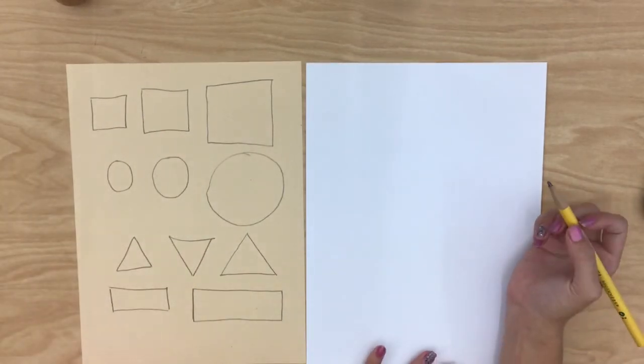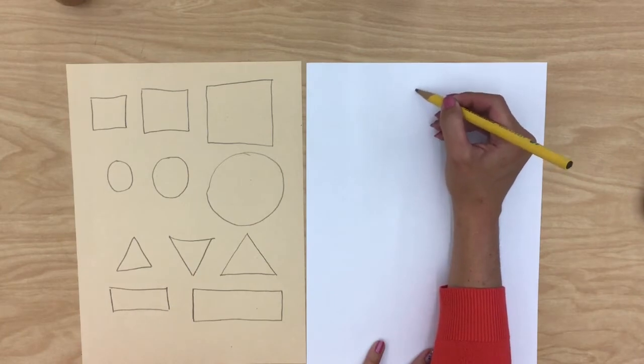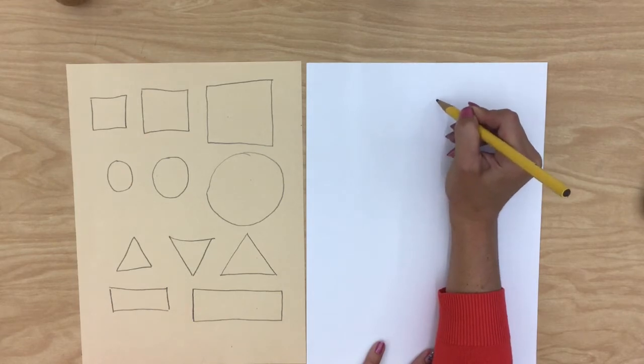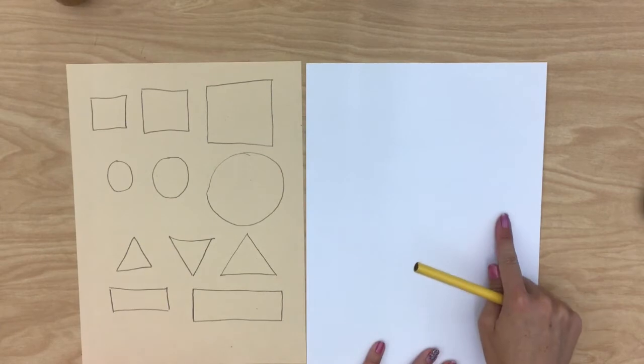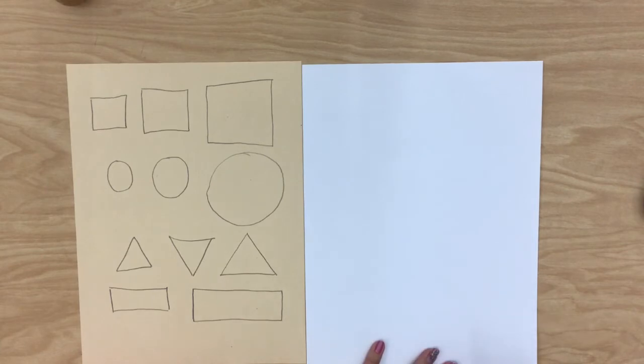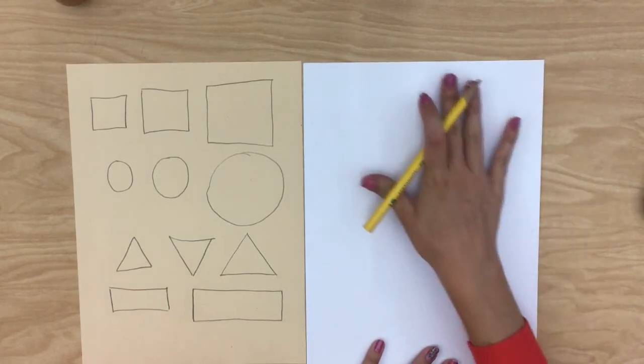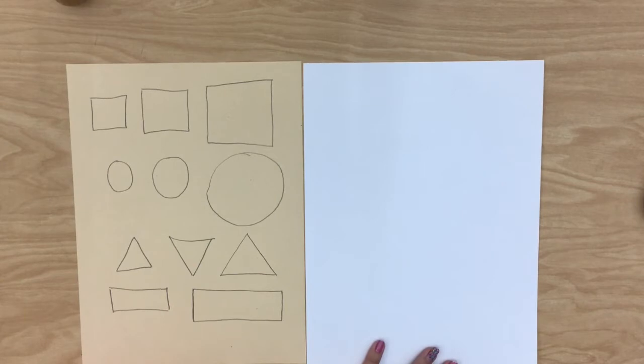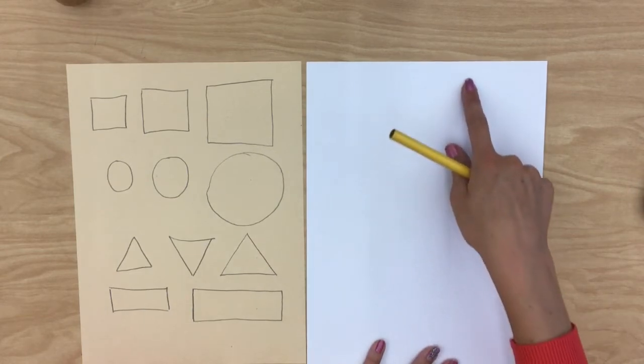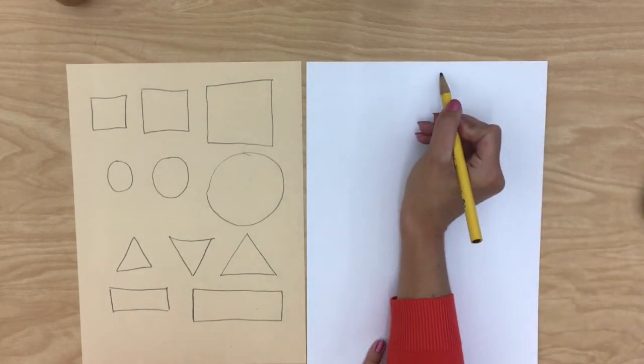We are first going to decide how big we want our robot's head to be. Now if I draw my robot's head really teeny tiny it might be hard to draw his face in there. If I draw my robot's head gigantic I might not have room for my body down here. You want to create a good composition. A good composition means you have room for everything on your artwork. So I'm going to try with my finger first and I'm going to outline about how big I want my robot's head to be. I want my robot to have a square head.